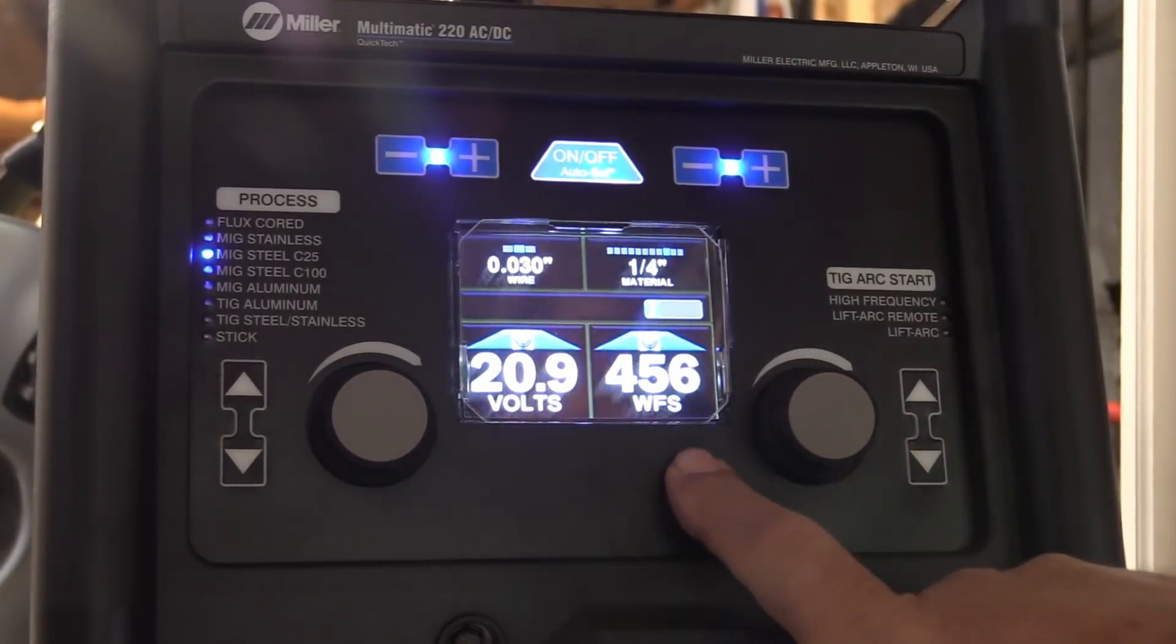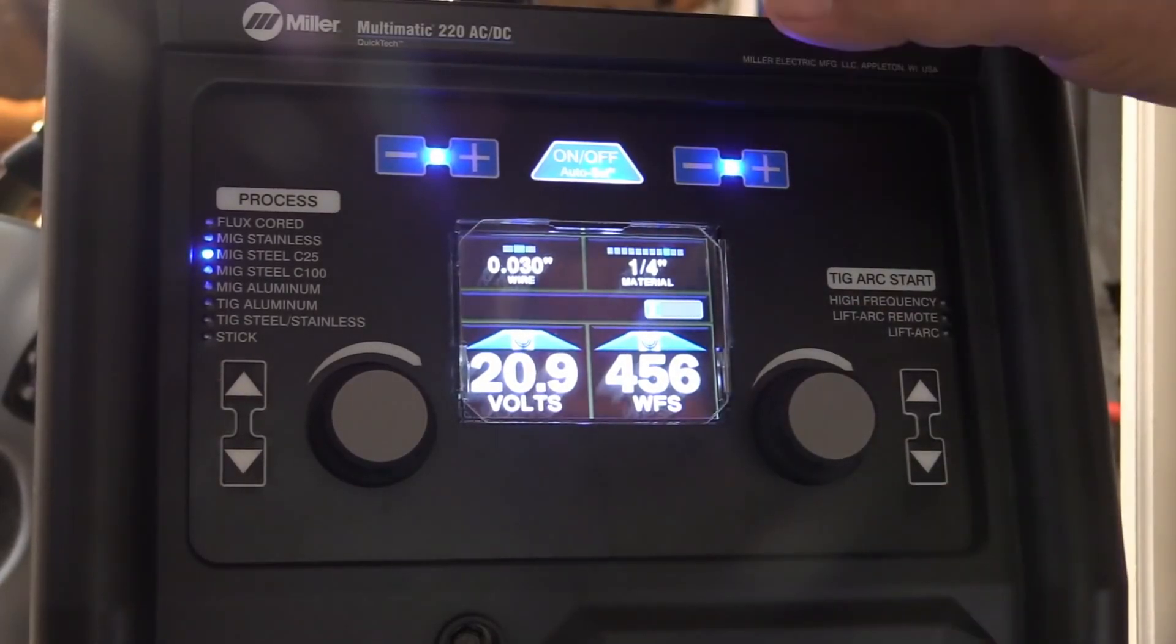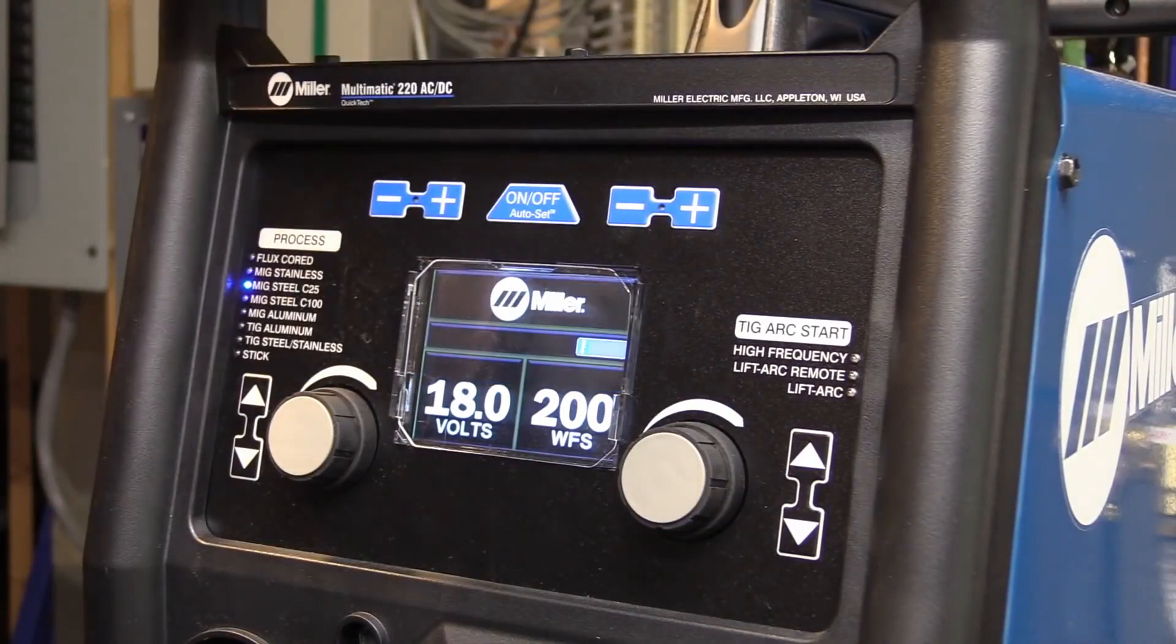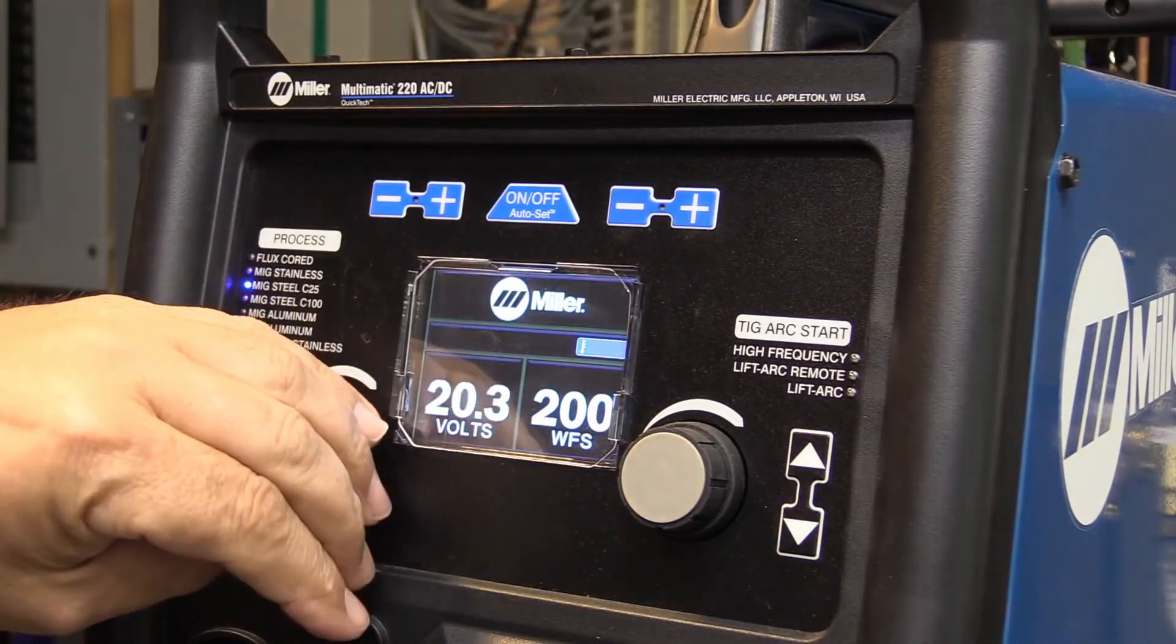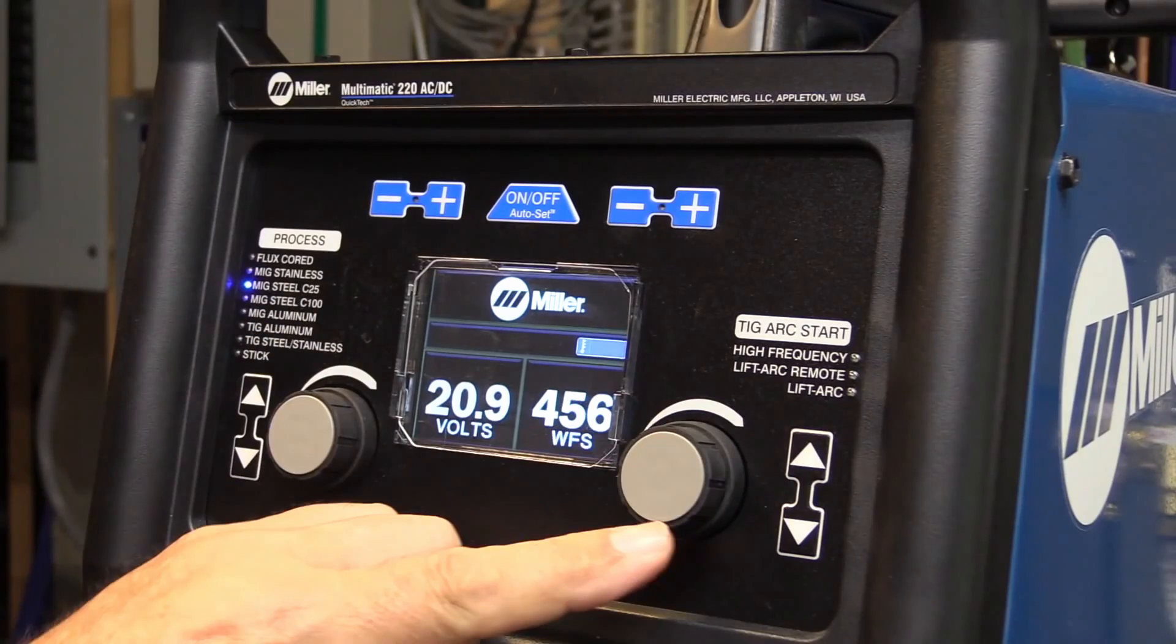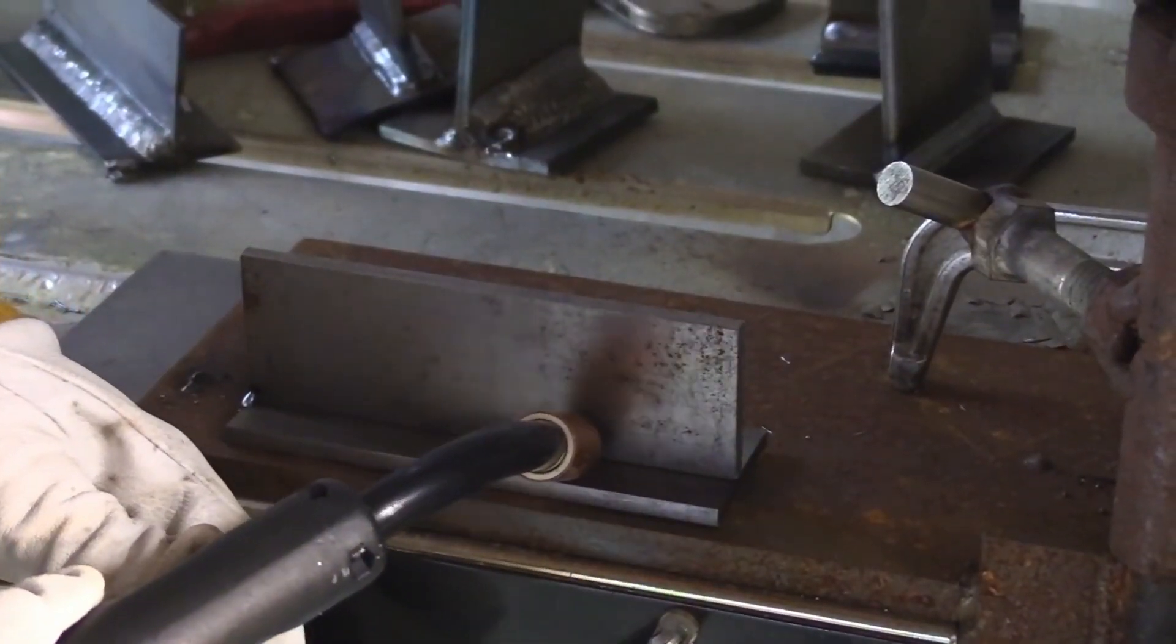I can just use this auto setting and all I have to do there is select the thickness and it puts those settings from the chart right onto the panel, or I can go manual by turning the auto set off. Some machines the auto settings aren't very good, but this one I found to be really close, so that's what I'm going to do today for the most part.